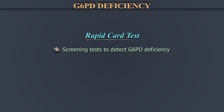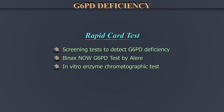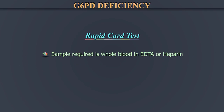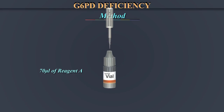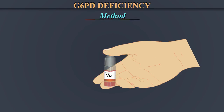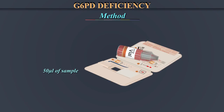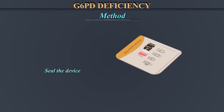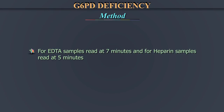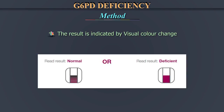Rapid Card Test: There are also rapid tests available as screening tests to detect G6PD deficiency — for example, the BinaxNOW G6PD test by Alere. It is a simple in vitro enzyme chromatographic test. The sample required is whole blood in EDTA or heparin. Method: Step 1 — Add 70 microliters of reagent A to the sample preparation vial. Step 2 — Transfer 10 microliters of mixed blood to the sample preparation vial. Step 3 — Mix the blood sample with reagent A. Step 4 — Slowly add 50 microliters of sample to the middle of the white pad. Step 5 — Remove the adhesive strip and securely seal the device closed. Step 6 — For EDTA samples, read at 7 minutes; for heparin samples, read at 5 minutes. The result is indicated by a visual color change and is qualitative, reported as normal or deficient.